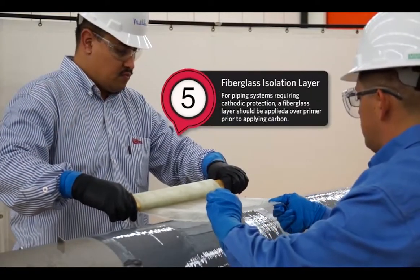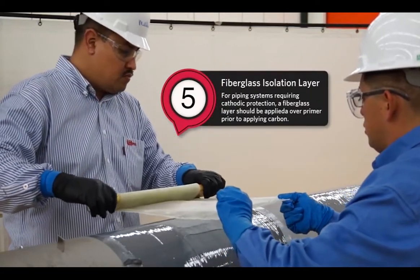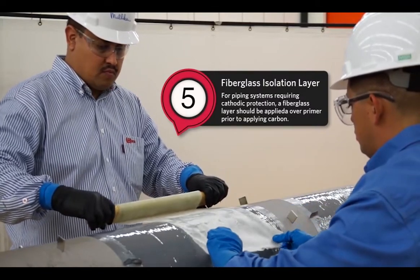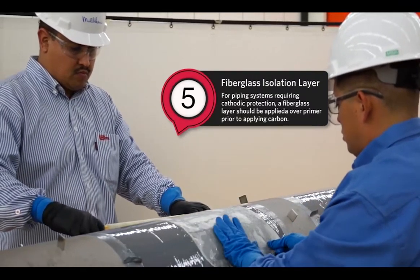For piping systems requiring cathodic protection, a fiberglass isolation layer should be applied over the primer prior to applying carbon.